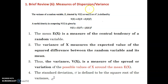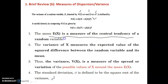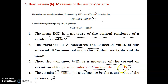The measure of dispersion or variance: the variance of a random variable is denoted by V(X), Var(X), or sigma squared. The mean E(X) is a measure of central tendency. The variance measures the expected value of the squared difference between the random variable and its mean, and is a measure of spread or variation of possible values of X around the mean E(X). This is also related to the standard deviation.